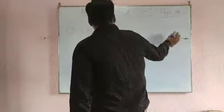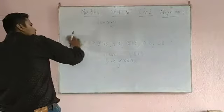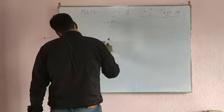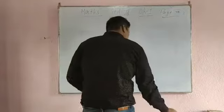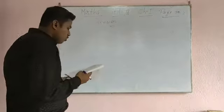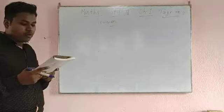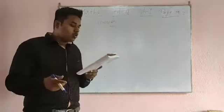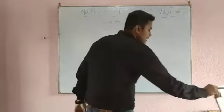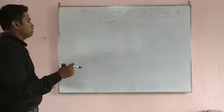Now we will go to question number 17. Question number 17 is: write the following numbers in descending order. Question number 18 is: write the numbers in descending order. So for ascending and descending, I am going to give you some examples.